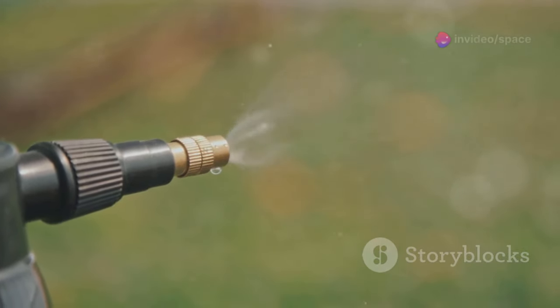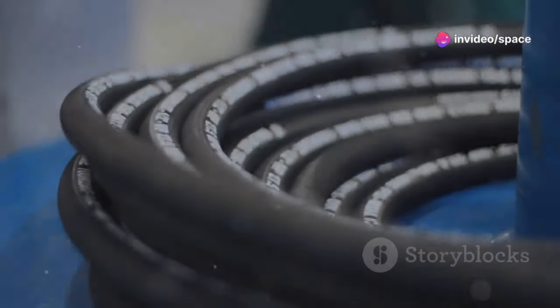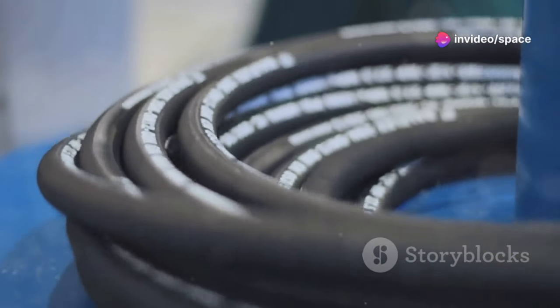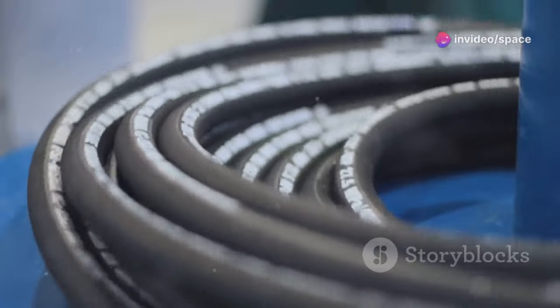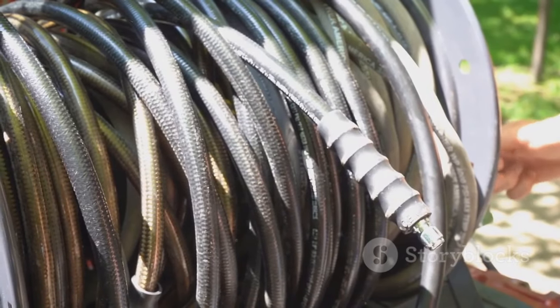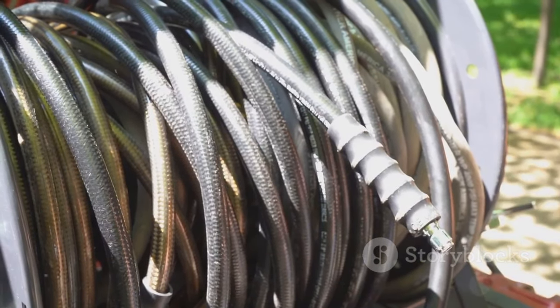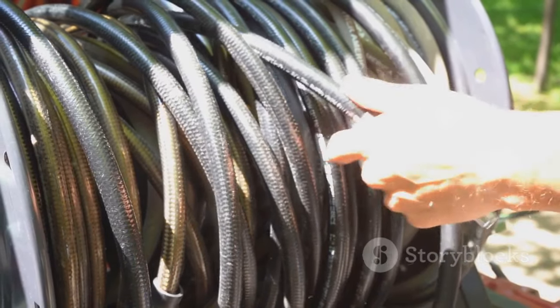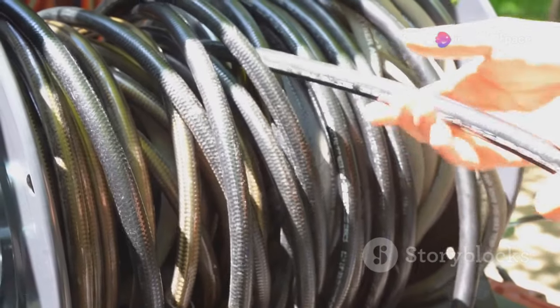Imagine a garden hose. From afar it looks like a one-dimensional line, but as you get closer you can see its two-dimensional surface, revealing more complexity. This analogy helps us understand the concept of hidden dimensions that aren't immediately visible.